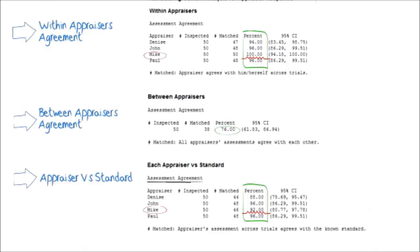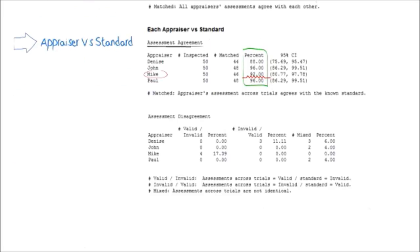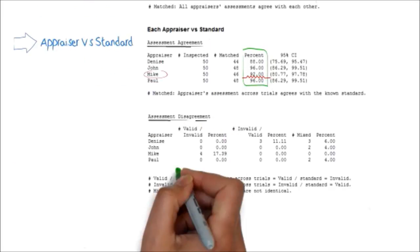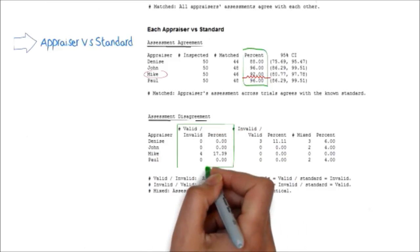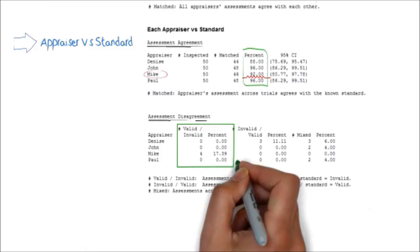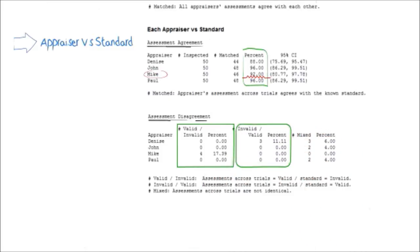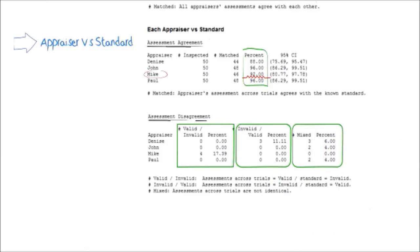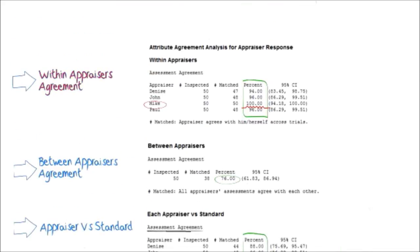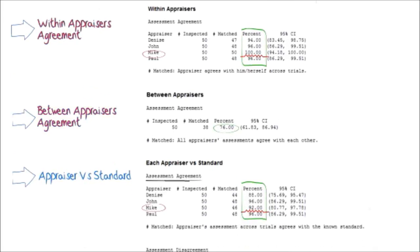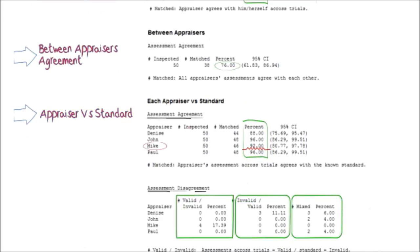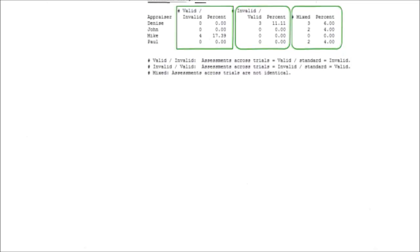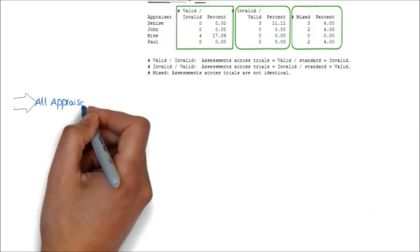But what about the accuracy — can we know how many requests have been classified incorrectly? Minitab offers an assessment disagreement that shows the number of times an appraiser classified the request as valid while the request should have been classified as invalid, and vice versa. The mixed column means that the assessments across the studies are not identical. So far we have seen the within appraisers analysis, the between appraisers analysis, the appraiser versus the standard showing an assessment of agreement and disagreement, and the last analysis is all appraisers versus the standard.